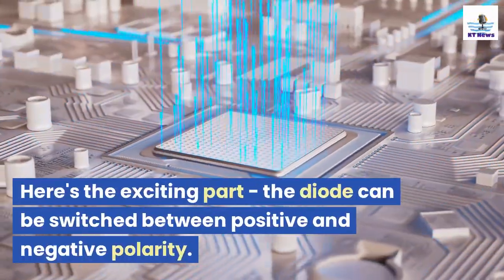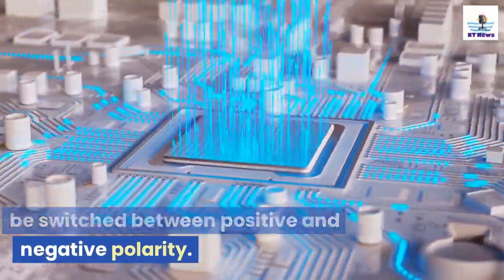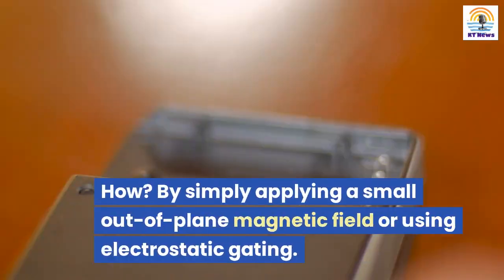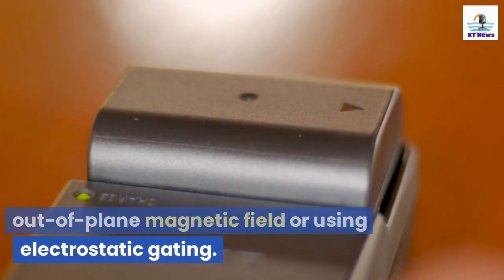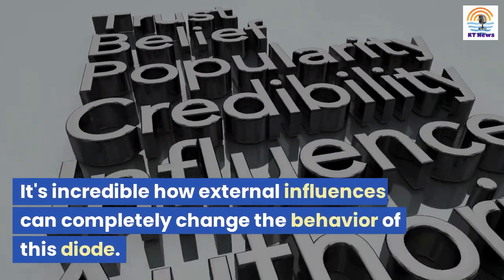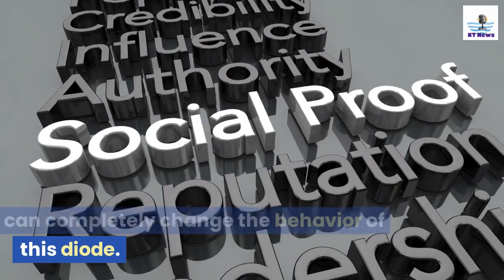Here's the exciting part, the diode can be switched between positive and negative polarity. How? By simply applying a small out-of-plane magnetic field or using electrostatic gating. It's incredible how external influences can completely change the behavior of this diode.